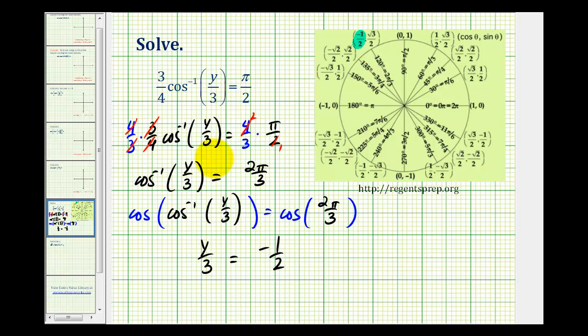The last step would be to multiply both sides of the equation by three, or three over one. So on the left side, we just have y, and on the right side, we have negative three-halves. So we have y equals negative three-halves.